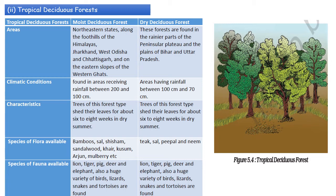Regarding climatic conditions: moist deciduous forests are found in areas receiving rainfall between 100 and 200 centimeters, while dry deciduous forests are found in areas having rainfall between 70 to 100 centimeters. In both moist and dry deciduous forests, trees shed their leaves for about six to eight weeks in the dry summer.